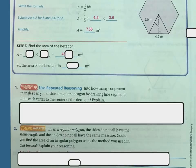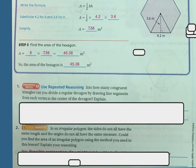So if one triangle is 7.56 meters squared, there are six triangles. So I'm going to multiply that by six to find out the entire hexagon shape. So six times the 7.56 is 45.36. So the area of this hexagon is 45.36.